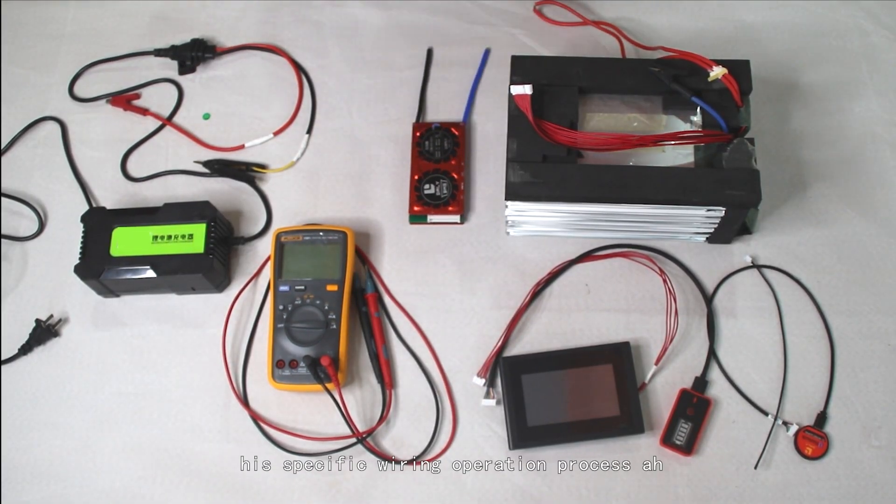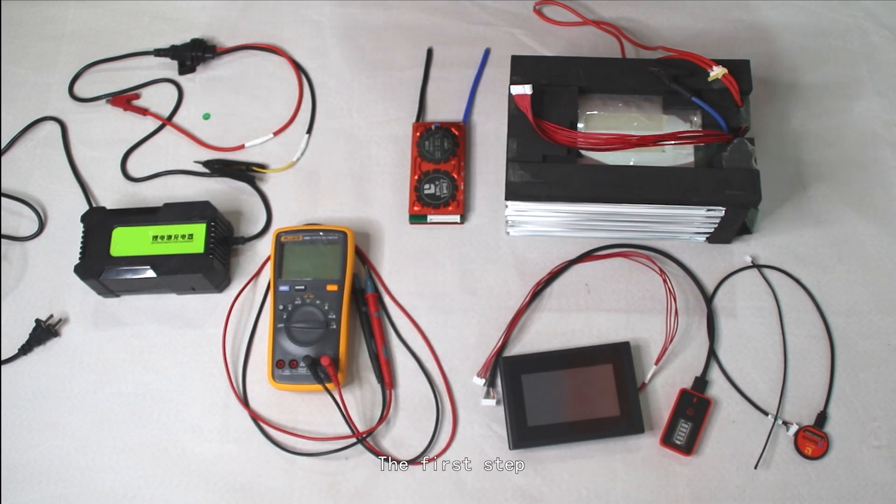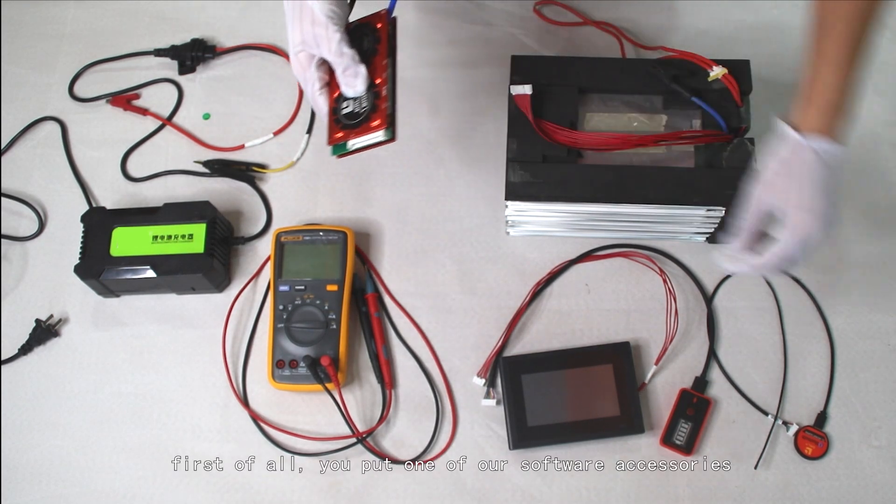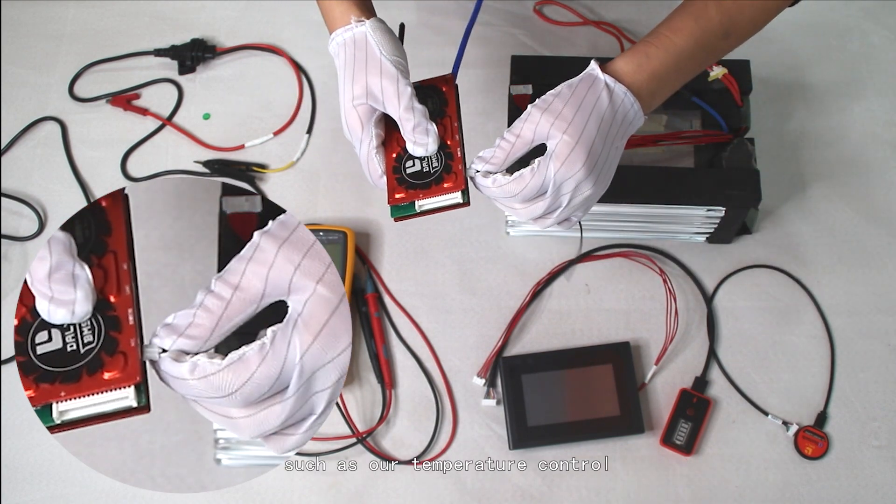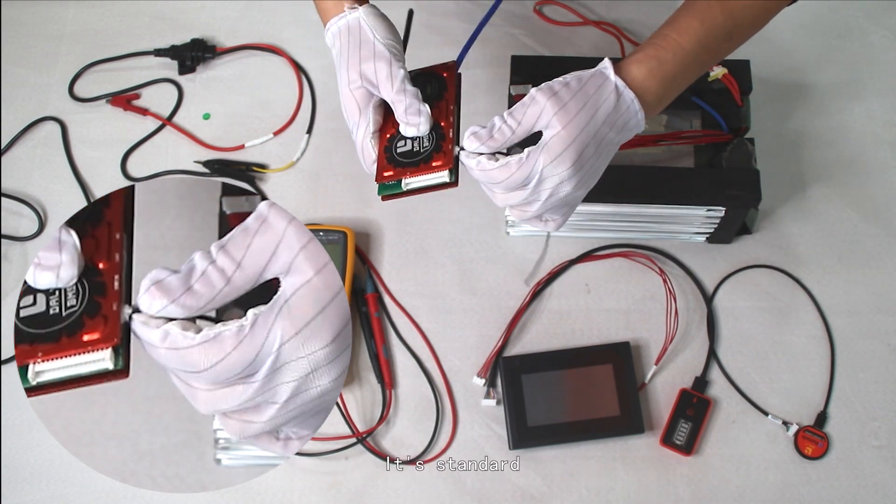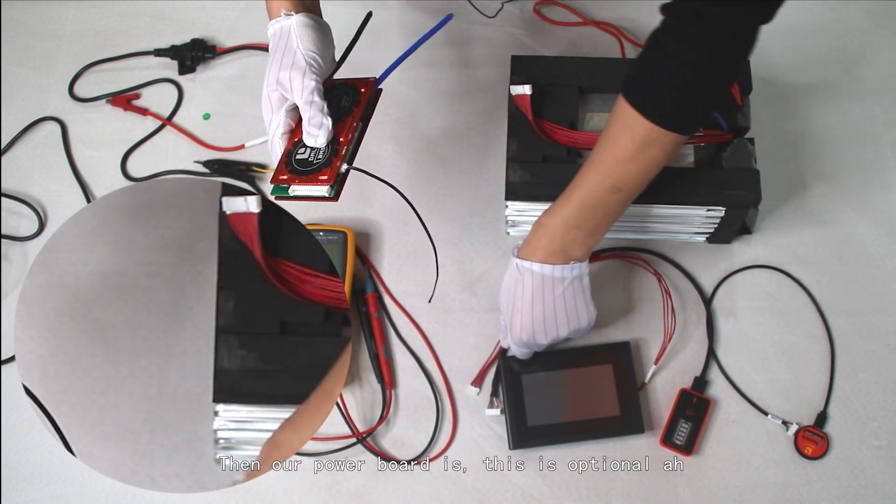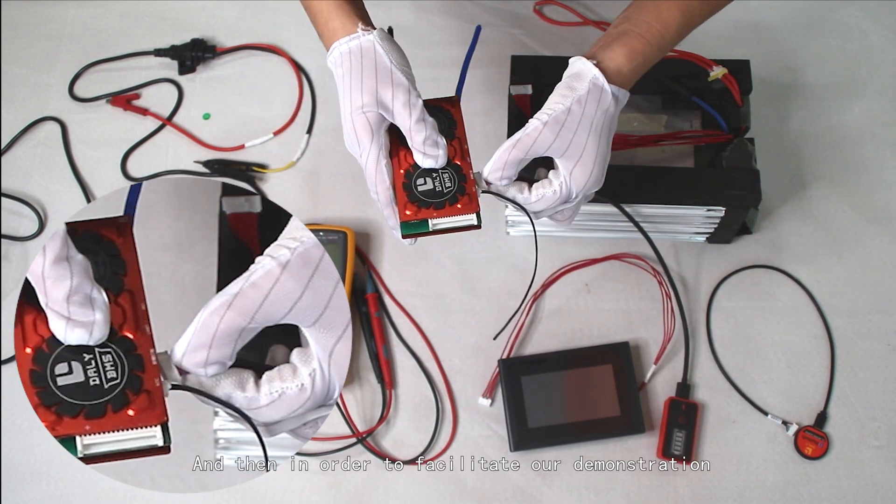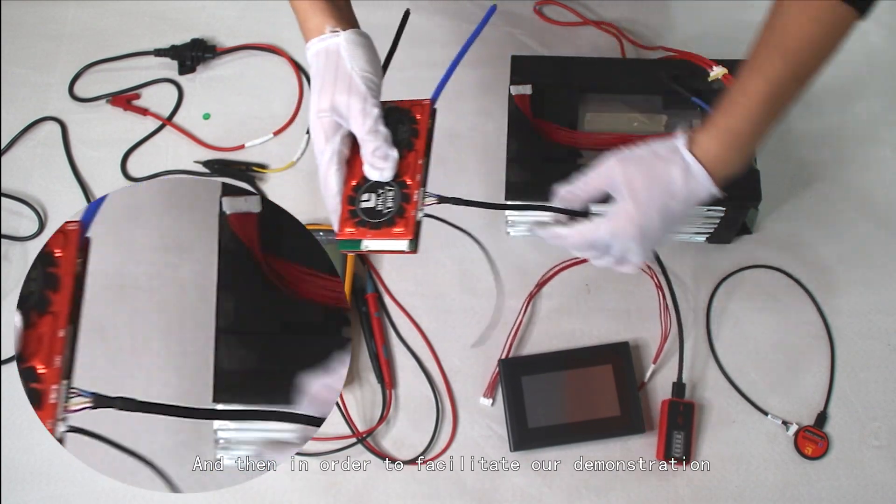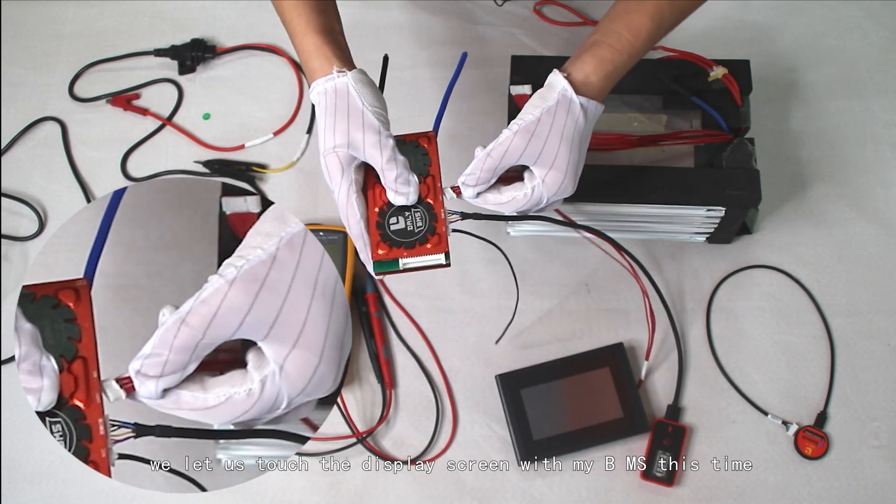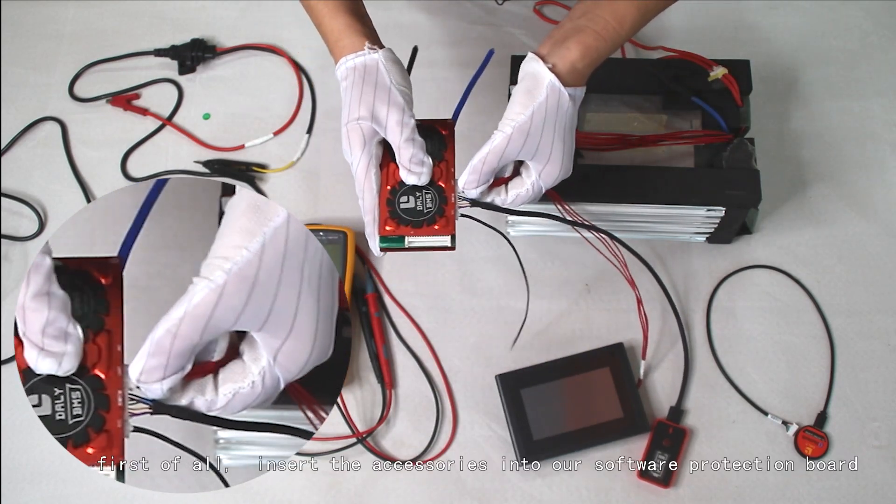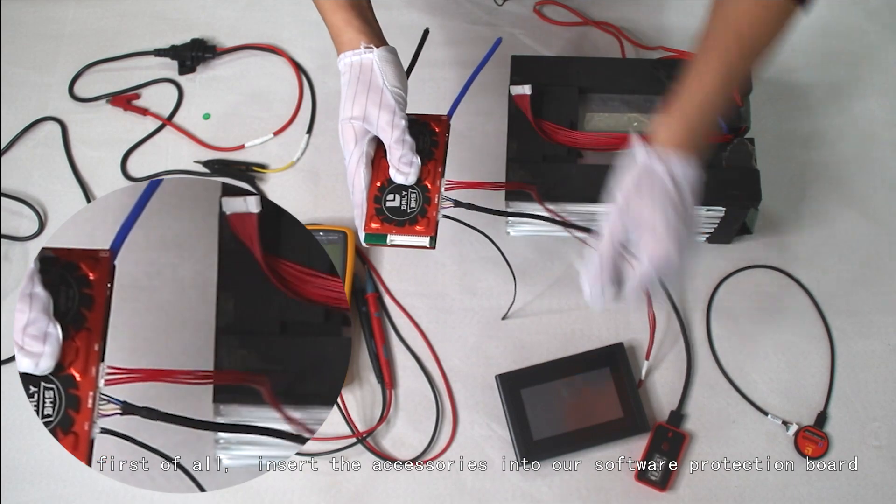Next, let's talk about the specific wiring operation procedure. First, put in our software accessories - our temperature control is standard, then our power board (this is optional). For demonstration, we'll use the touch display screen with my BMS. Insert the accessories into our software protection board.